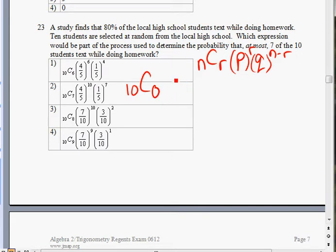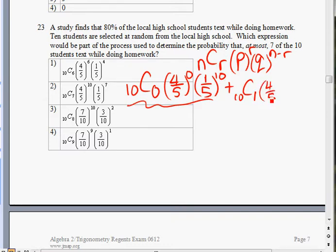What's the chances of 0 students texting from the random 10 students selected? That is 10C0. P is the probability of texting. It's 80%, so 80% simplifies to 4 out of 5. And you want 0 though. One out of 5 is the probability that students do not text, so not texting. And you want 10 of them.